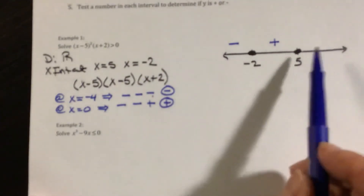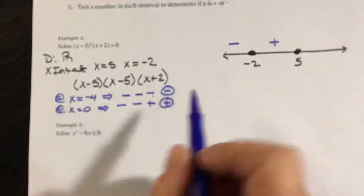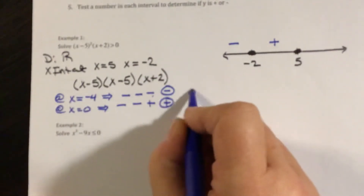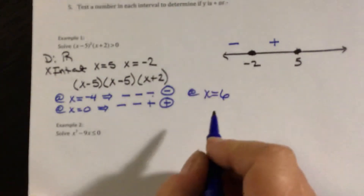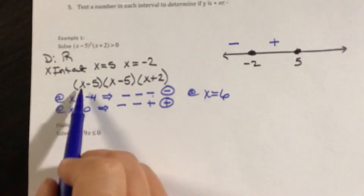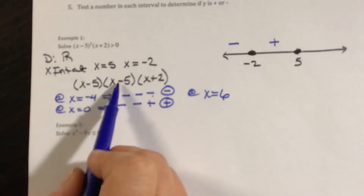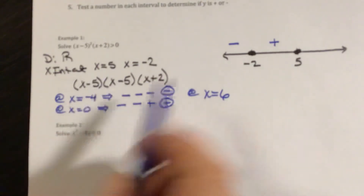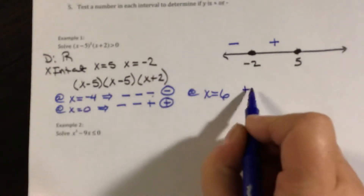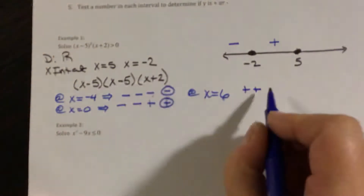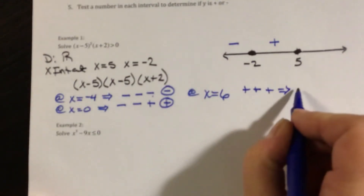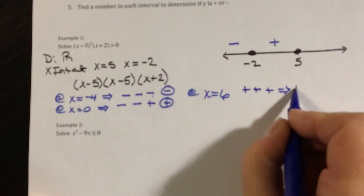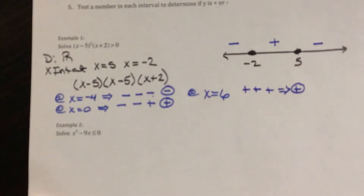Now I pick a number between negative 2 and 5, so at x equals 0: 0 minus 5 is negative, 0 minus 5 is negative again, and 0 plus 2 is positive. Because I have two negatives — an even number — those values are positive. For a number bigger than 5, at x equals 6: 6 minus 5 is positive, two positives there, and 6 plus 2 is positive, so this region is also positive.